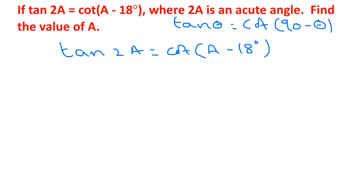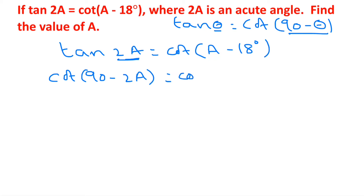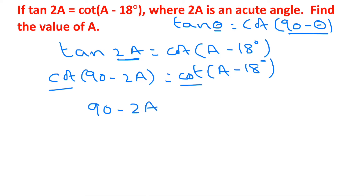Assuming θ = 2a, tan 2a equals cot(90° - 2a). Setting this equal to cot(a - 18°), since we have cot on both sides we eliminate it and write 90° - 2a = a - 18°.